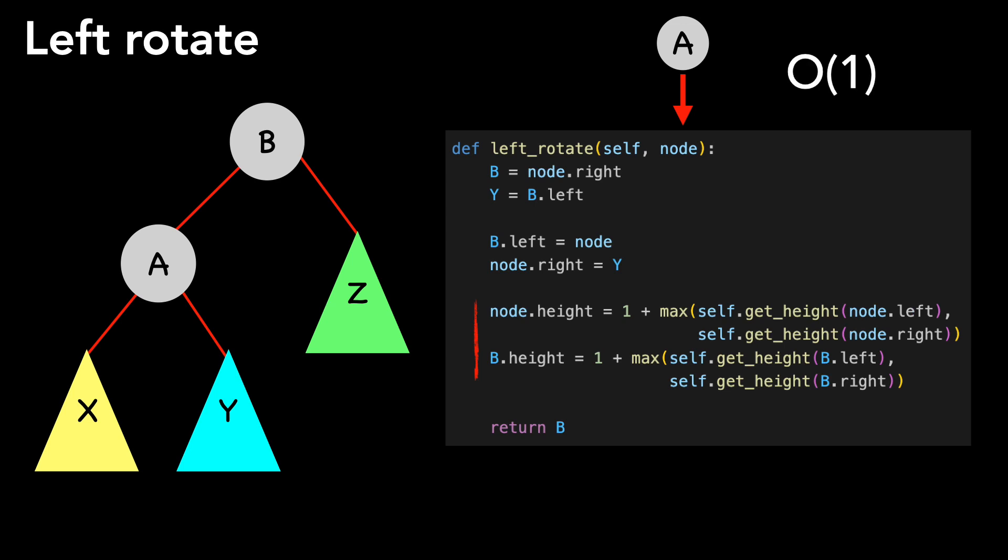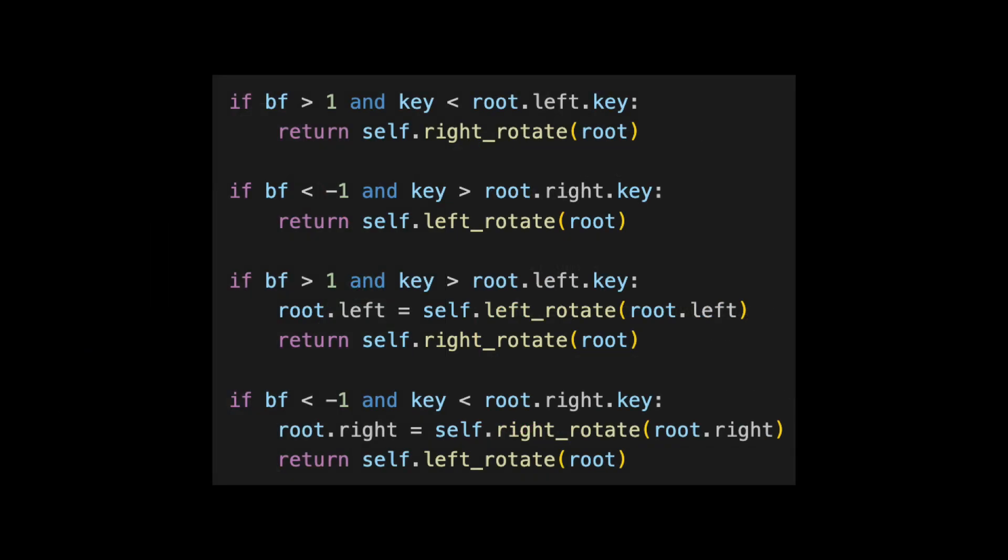I'll show you the logic for when you need to perform rotations, and then we'll take a look at some examples. Here's the insert code that encompasses rebalancing. There are two groups, single rotations and double rotations. To determine which, we look at the balance factor of the unbalanced node and how the key we added compares to the node's left or right child. With this information, we can determine if the tree is left or right heavy.